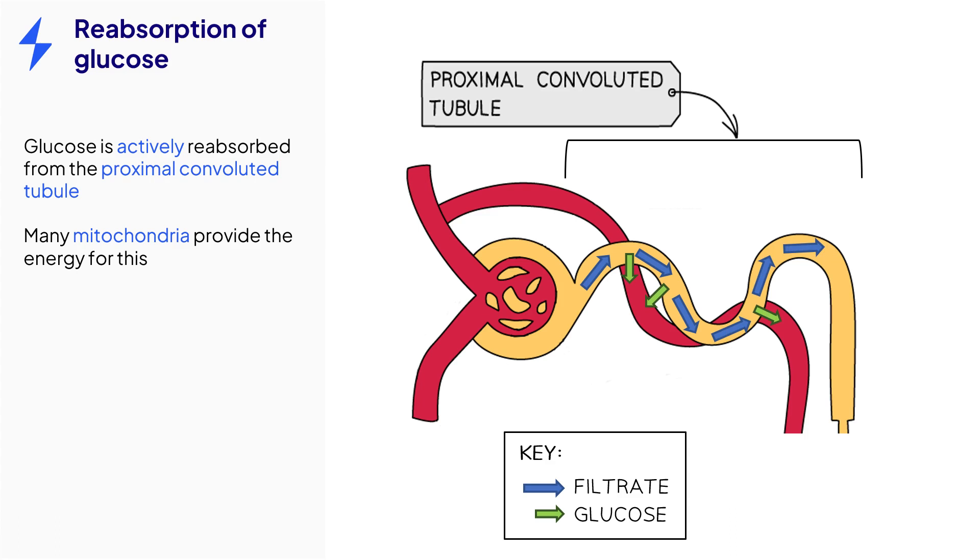Remember that active transport requires energy, so the cells of the proximal convoluted tubule will contain many mitochondria to enable glucose molecules to move back into the blood.